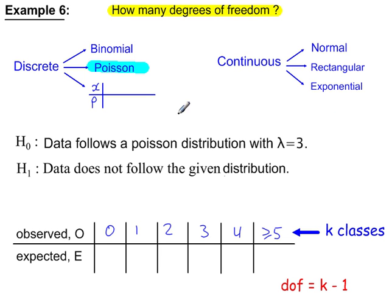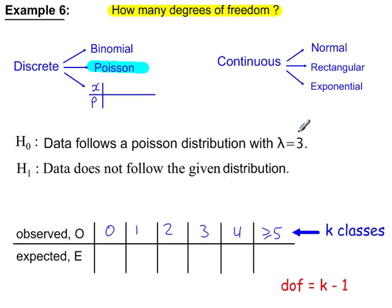Example 6: does the data follow a Poisson distribution with parameter lambda = 3? There are k classes, so k minus 1 degrees of freedom. We're testing both the Poisson distribution and its assumed parameter lambda = 3.